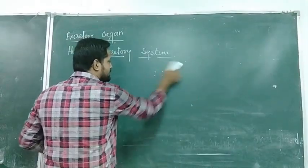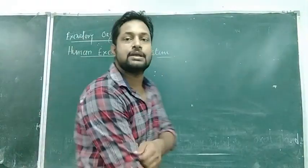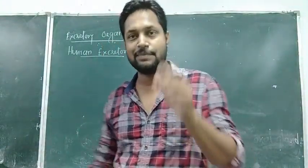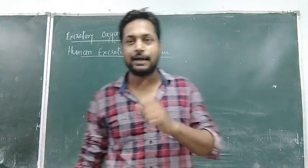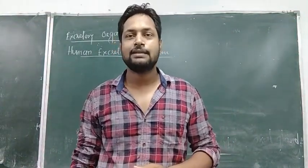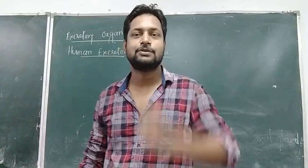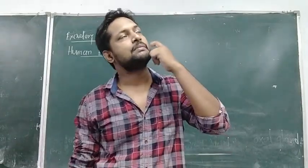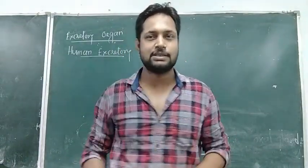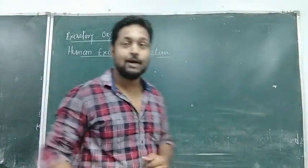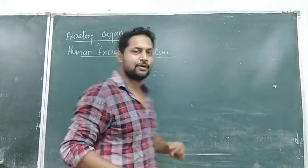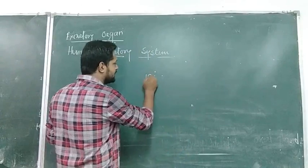The kidney in a human being weighs about 100 to 200 grams. The length of the kidney is about 12 cm.